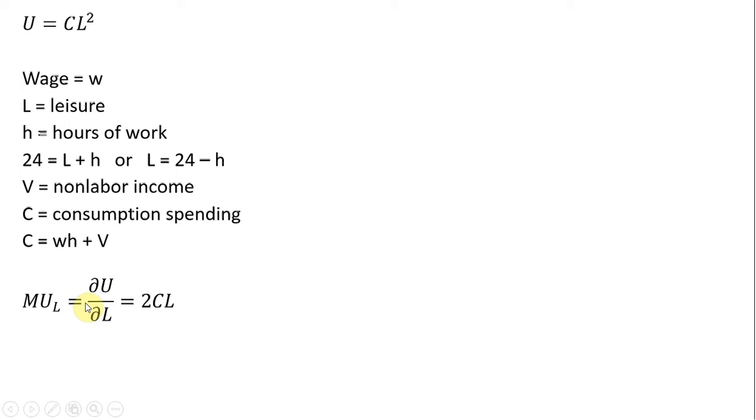We need the marginal utility of leisure. Taking the partial derivative of the utility function with respect to L, we get 2CL. To get the marginal utility of consumption, we take another partial derivative, and in this case, we get L squared.